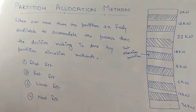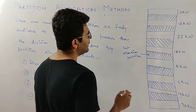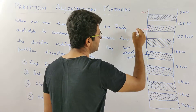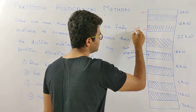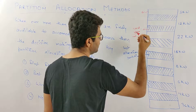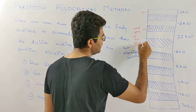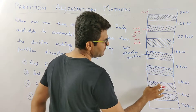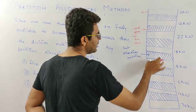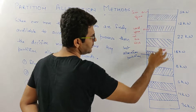We use partition allocation method when you have a memory and there are many free blocks available. Here in memory, the dashed blocks represent used space — allocated blocks — and the empty blocks represent free space.